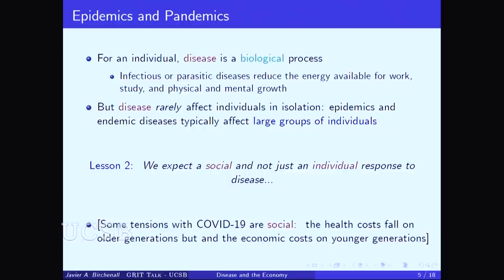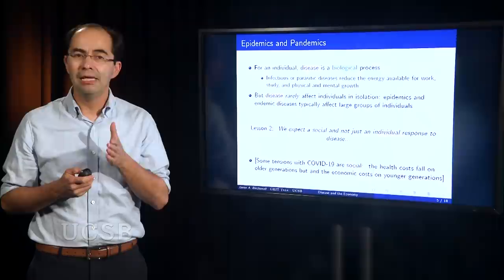That means, and this is my second lesson, instead of just having an individual response, we expect a social response. Now, it matters in the instance of COVID, for example, because a lot of the tensions were social. The health cost initially fell on older generations, but the economic cost, the lockdown, fell mostly on younger generations. This is a social tension. It's not just about individuals. So, I still have not, and it will take me some time to tell you what sort of response we expect, but we expect a social response. Of what form? That's what's coming next.